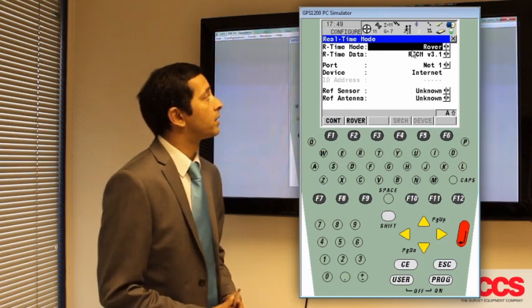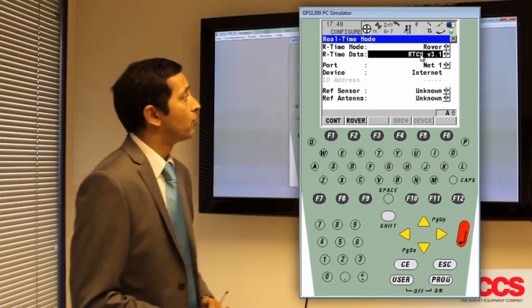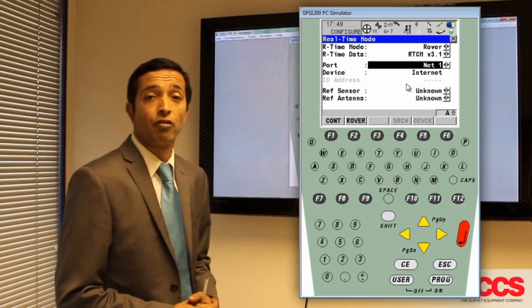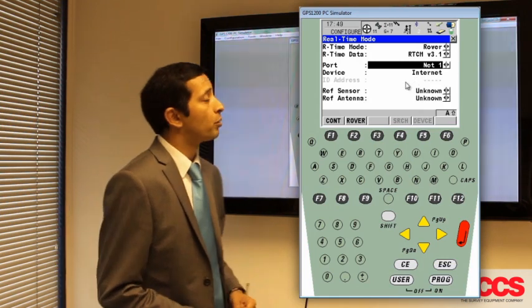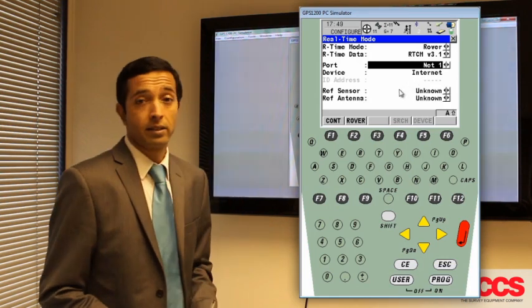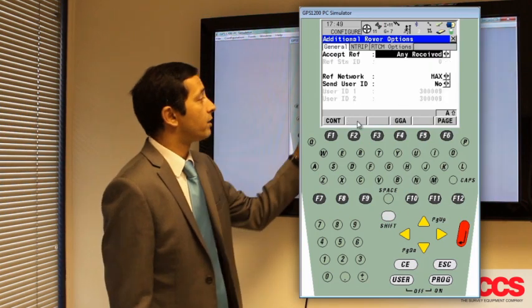On this page, you're expecting to see real-time mode as rover, real-time data RTCM version 3.1, the port should be net one and your device should be internet. If these are correct, then press F2 rover.